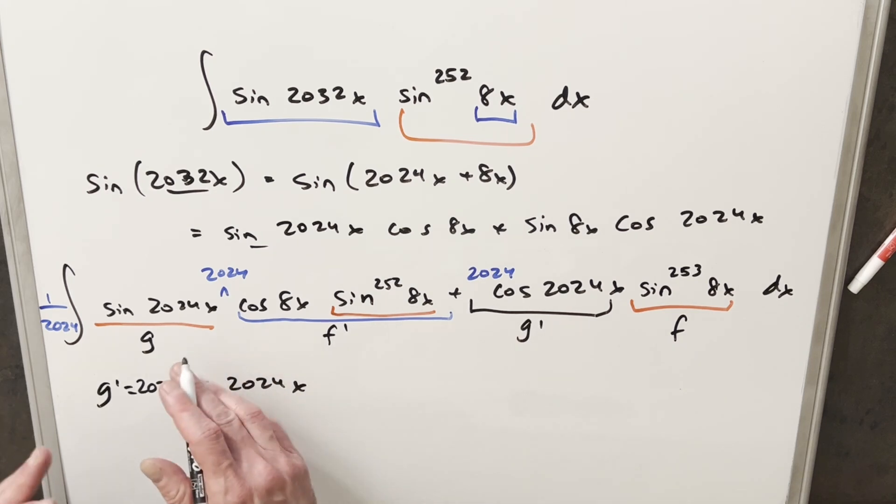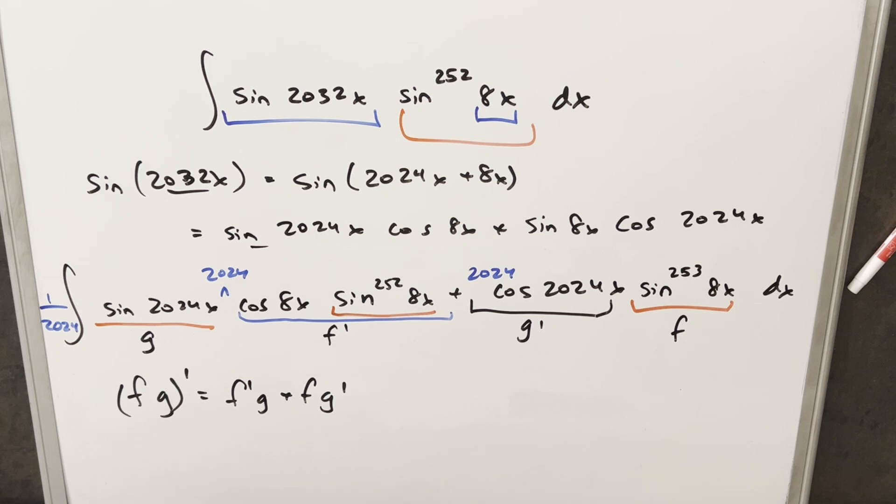So what we actually have here is inside the integral of this whole thing is actually just the product rule. Okay, so we have our product rule right here, and it just tells us that if we have the derivative of two functions, we take the derivative of the first times the second plus the first times the derivative of the second.